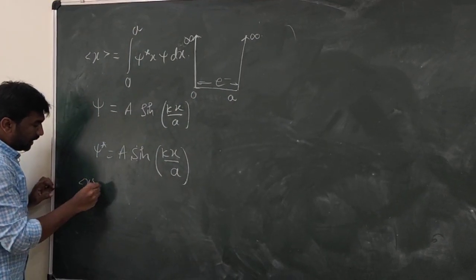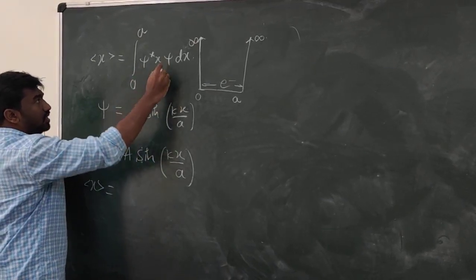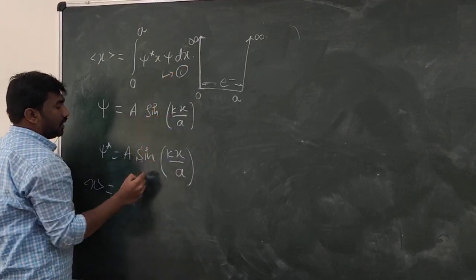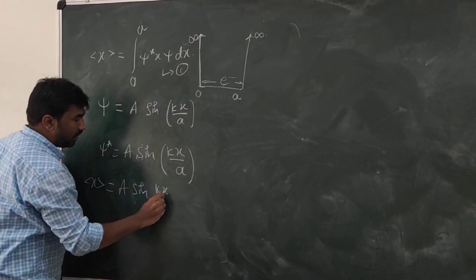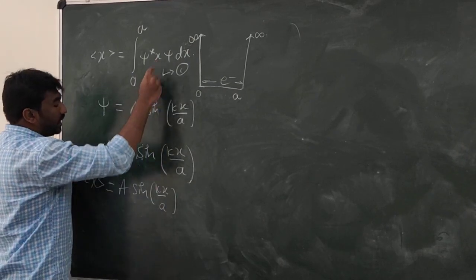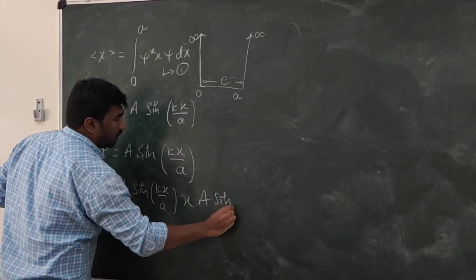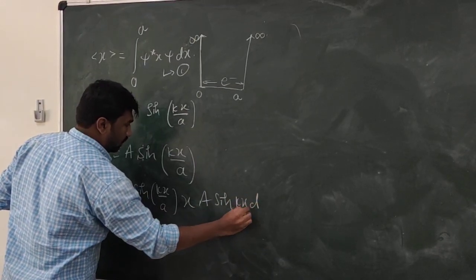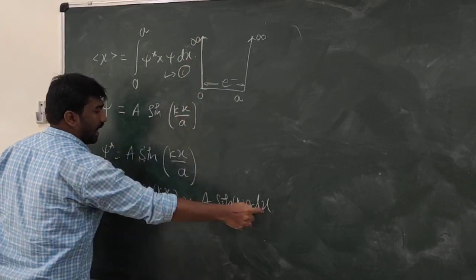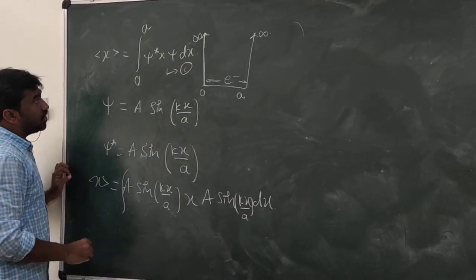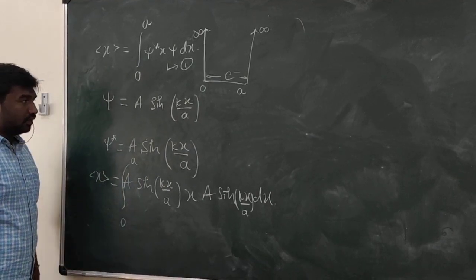Now the expectation value of x is equal to the integral from 0 to a of ψ* x ψ dx. Putting the values of ψ and ψ* into the expression, that is A sin(kx/a) into x into A sin(kx/a) dx, with limits from 0 to a.